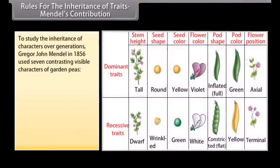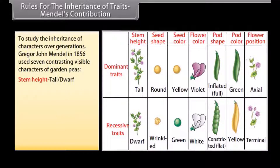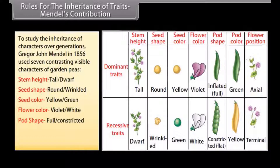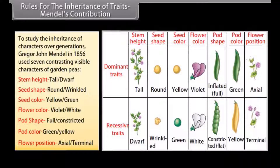To study the inheritance of characters over generations, Gregor John Mendel in 1856 used seven contrasting visible characters of garden peas: stem height (tall/dwarf plants), seed shape (round/wrinkled seeds), seed color (yellow/green seeds), flower color (violet/white flowers), pod shape (full/constricted pods), pod color (green/yellow pods), and flower position (axial/terminal flowers).